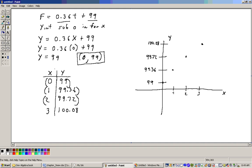So at 3, you have a coordinate 3, 100.08. Now, instead of graphing all these points, you really only need two points to graph a line.